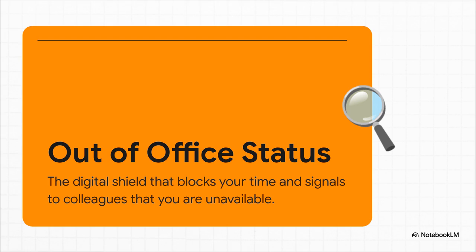Setting your status to out of office is an active defense for your time. When you mark yourself as busy, people can still try to book over it. But out of office? That tells Outlook: nope, not available — automatically decline anything new. It's your calendar's way of standing guard for you.